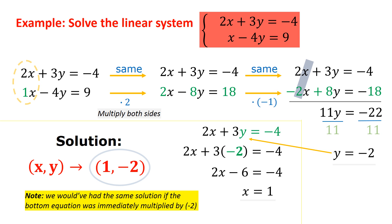From here, it's good advice to check it. And if you don't have time to do a formal check, just do a quick mental one. 2 times 1 plus 3 times negative 2. That is, in fact, negative 4. And then, if I substitute 1 for x and negative 2 for y in the second equation, end up getting 1 plus 8, which is 9. So, that confirms the solution is correct.